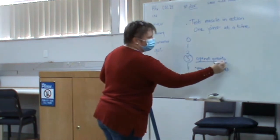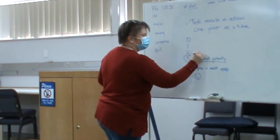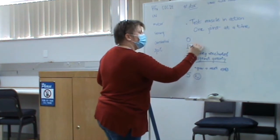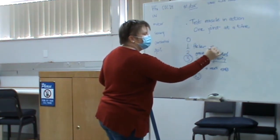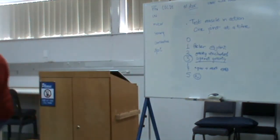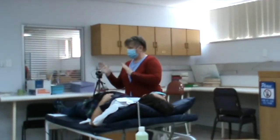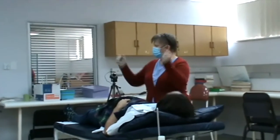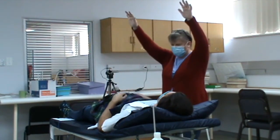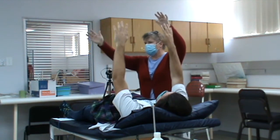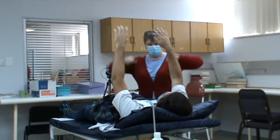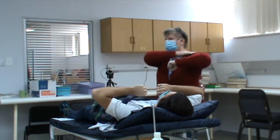Five is normal power; zero is nothing; one is a flicker; three is against gravity only; four is against gravity and some resistance. We start from the deltoid and move downwards. Use your lever and put your weight behind it. Hold it strong, then try to pull it down. That is the deltoid being tested — shoulder abduction.